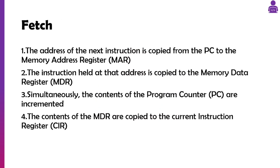First, we get the address of the next instruction. Let's say it's the first time running the program — the first instruction might be in slot one, or instruction zero if we're starting from zero. That address is copied from the program counter to the memory address register, the MAR.